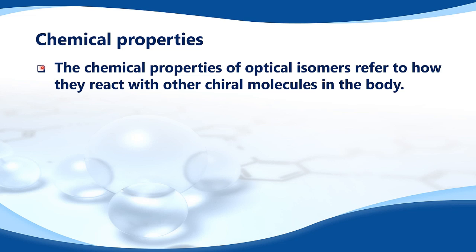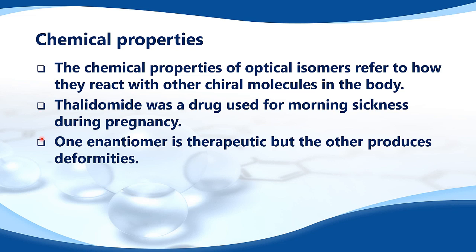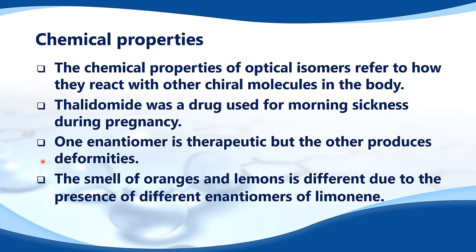The chemical properties of optical isomers refer to how they react with other chiral molecules in the body. For example, thalidomide was a drug used for morning sickness during pregnancy — one enantiomer is therapeutic but the other produces deformities. Another example is the smell of oranges and lemons, which is different due to the presence of different enantiomers of limonene.